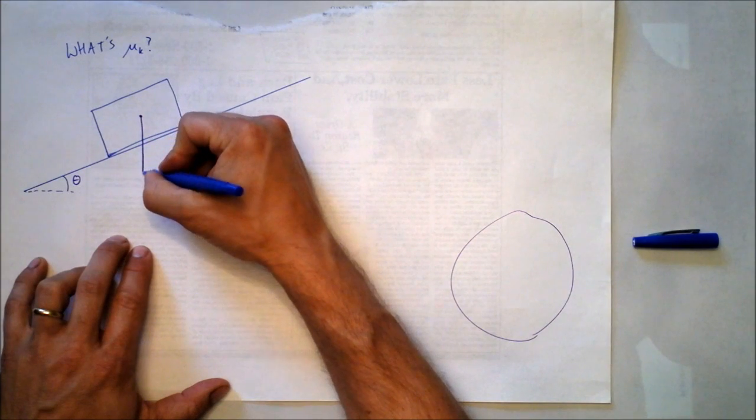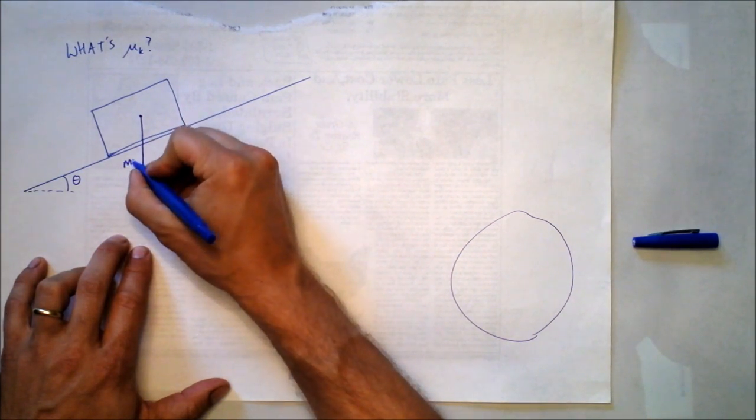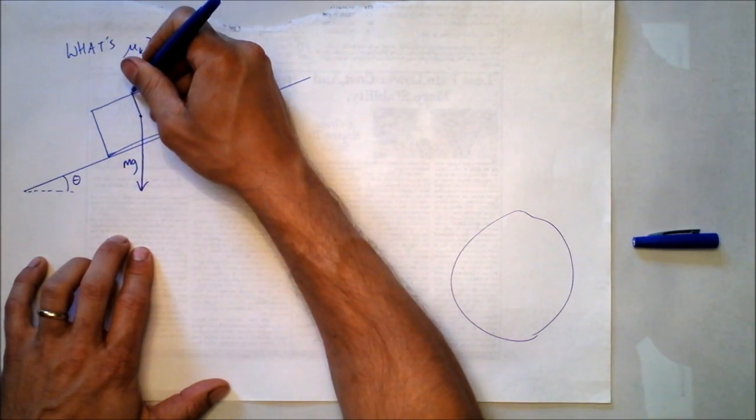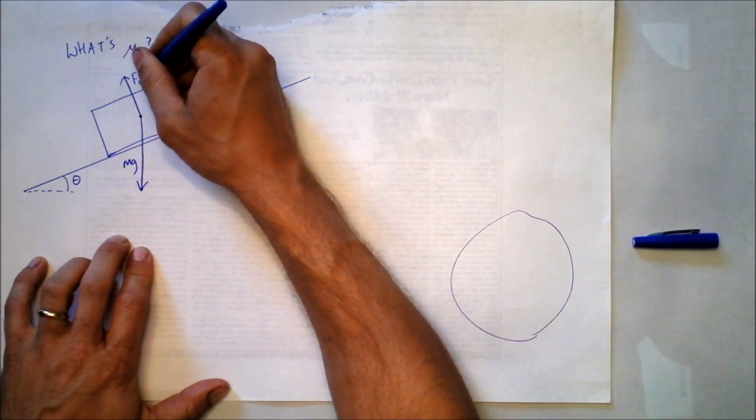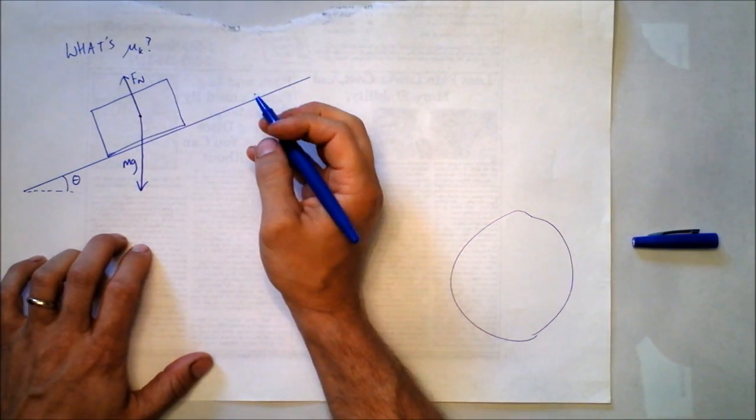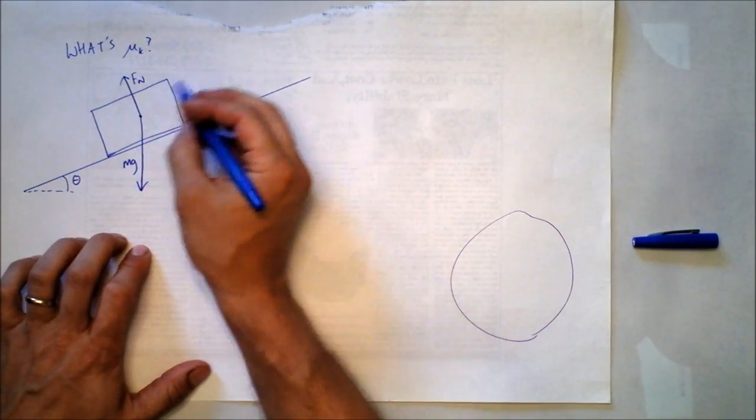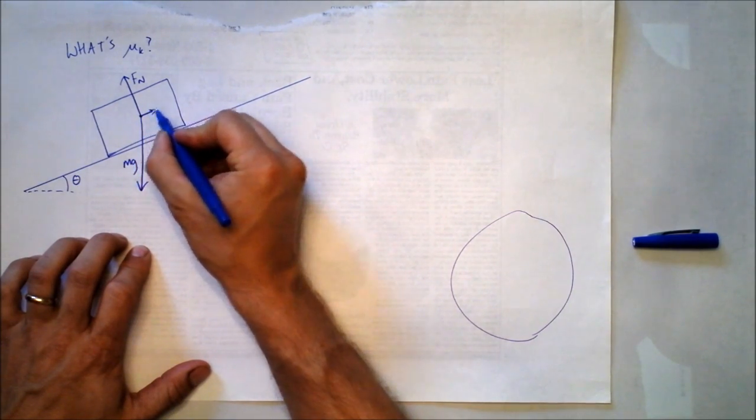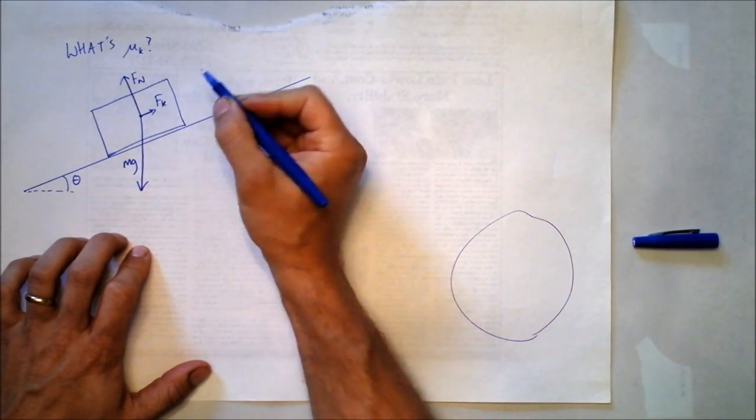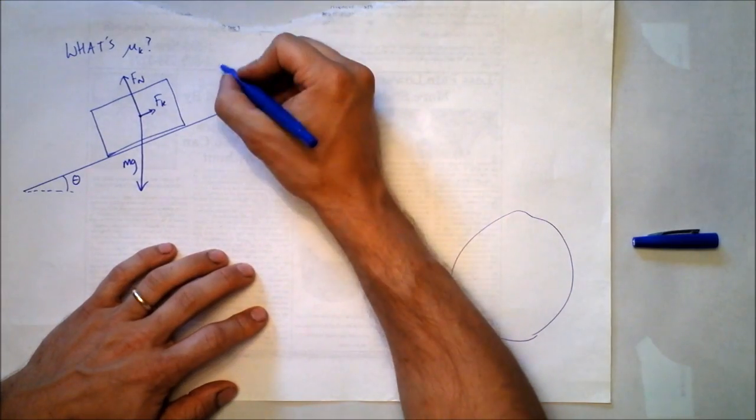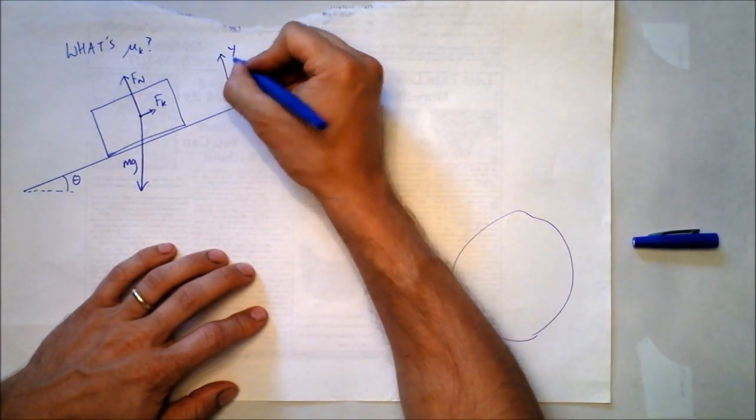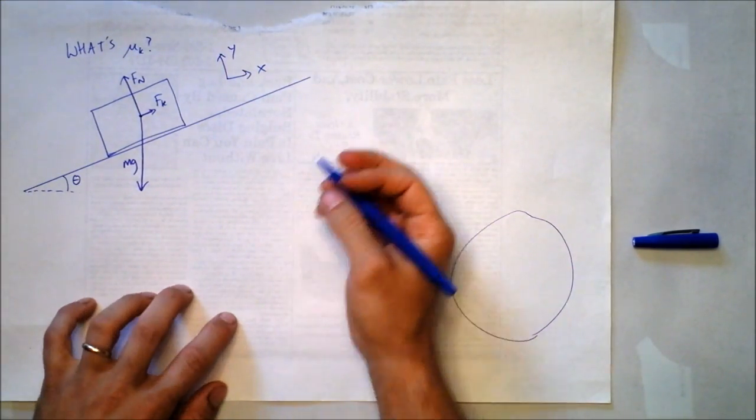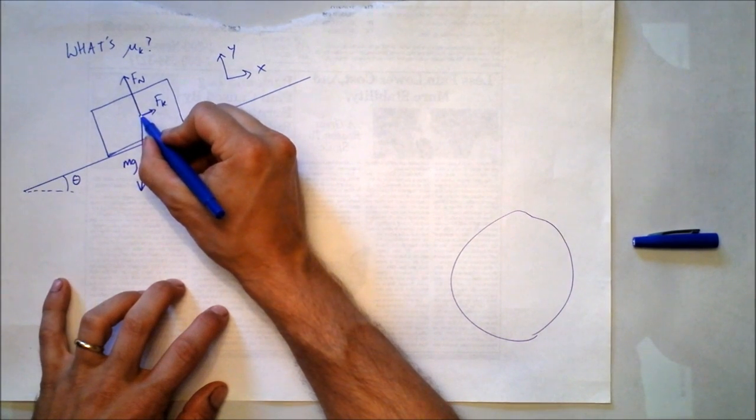Let's draw a free body diagram for this sucker. We got m times g right here. We've got the normal force this direction. And we've got friction. Let's see, it's sliding downward, so we've got friction this direction. This is f sub k. We need to establish a coordinate system, let's put it like this, like we usually do. And then we're going to resolve this vector right here.